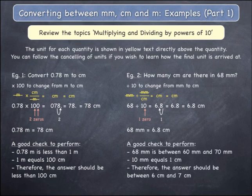As a final check, look at your starting quantity of 68 millimetres, which is between 60 millimetres and 70 millimetres. 10 millimetres equals 1 centimetre, and therefore you expect an answer that is between 6 centimetres and 7 centimetres.